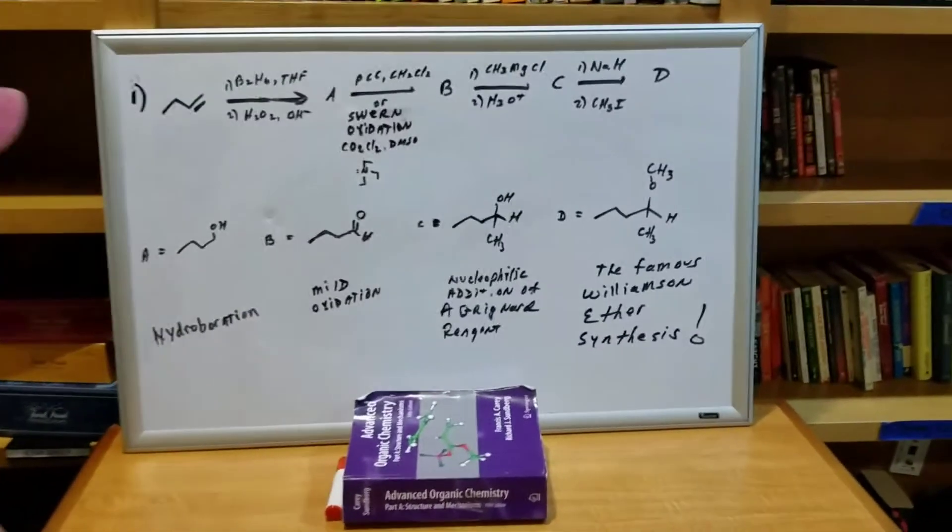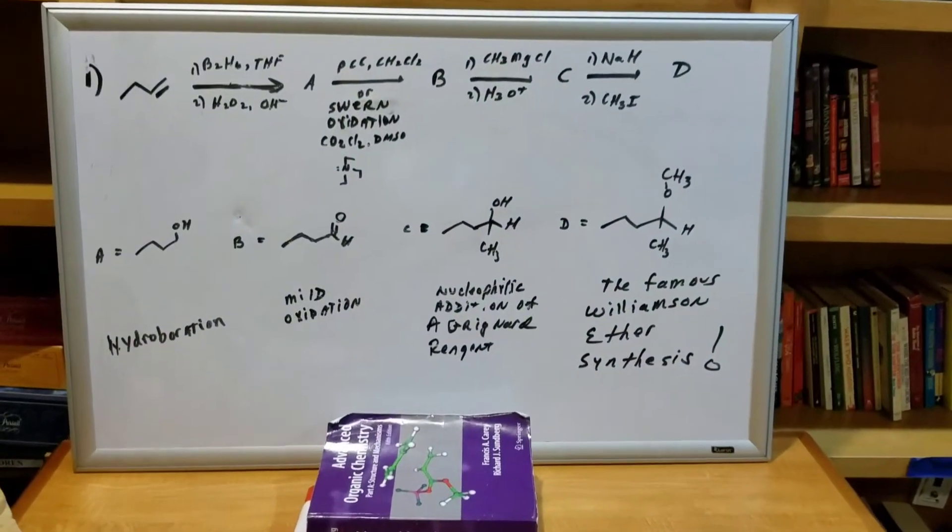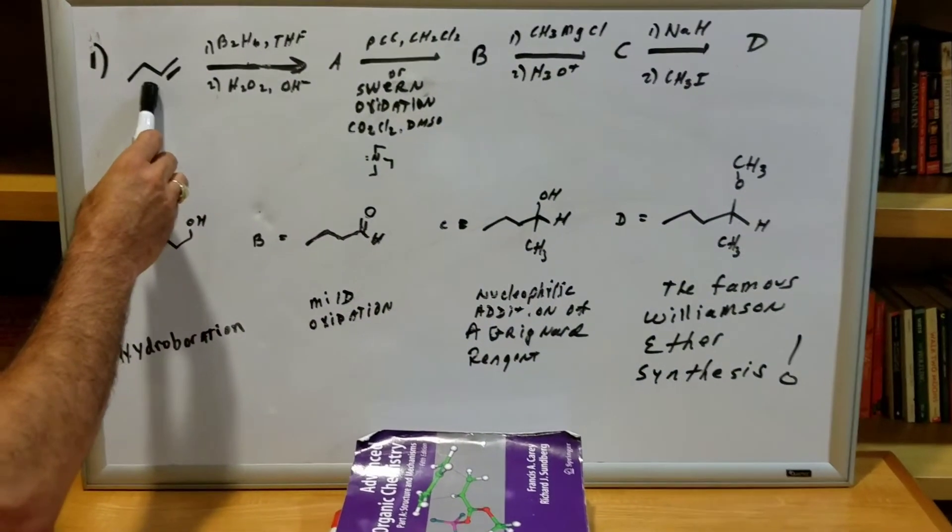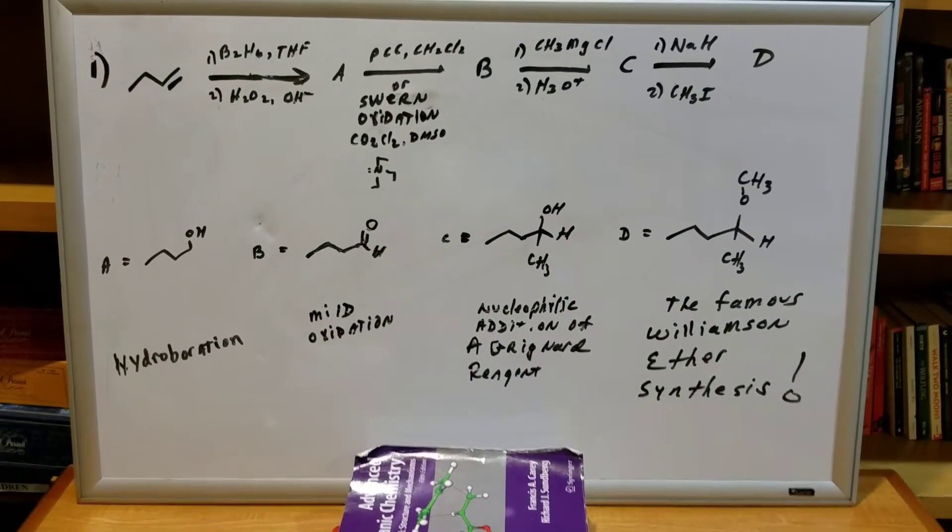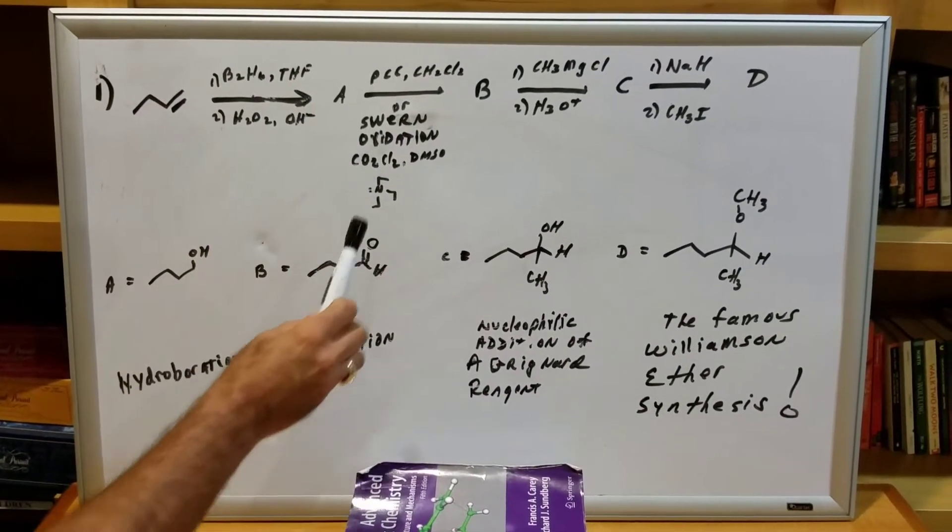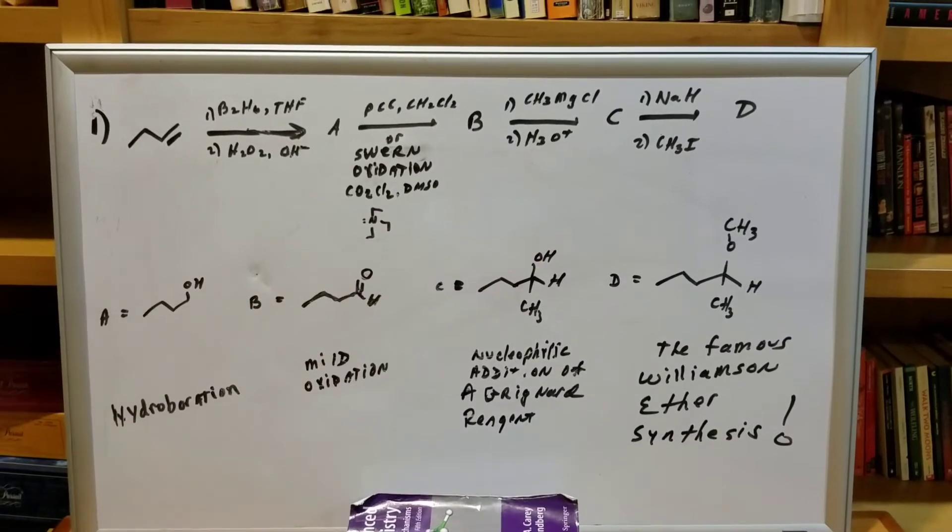What I'm doing here is called a transformation, and what I'm going to do is I'm going to start off with this compound called 1-butene, and I'm going to transform it into A, then B, then C, and then D.